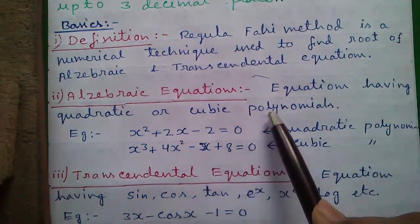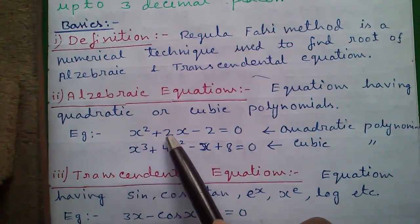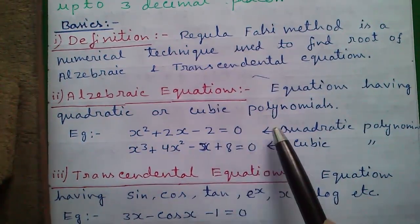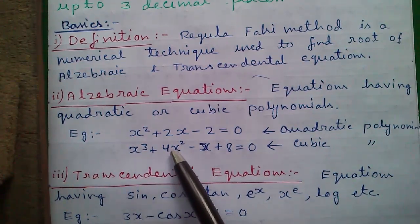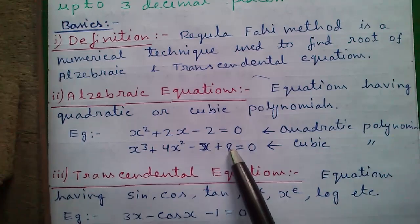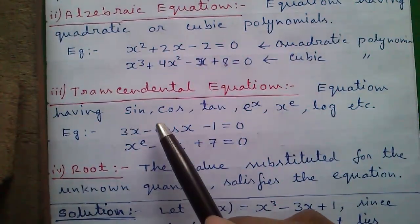So what's algebraic equation? Equations having quadratic or cubic polynomials are called algebraic equations. For example, x² + 2x - 2 = 0 is an example of quadratic polynomial. Similarly, x³ + 4x² - x + 8 = 0 is an example of cubic polynomial.